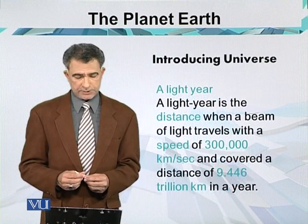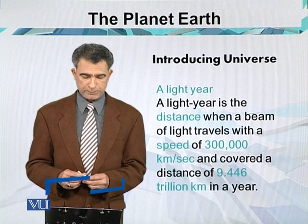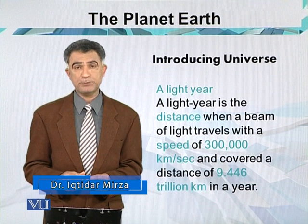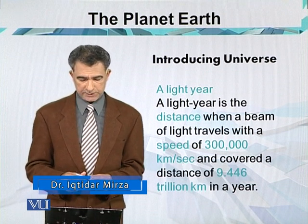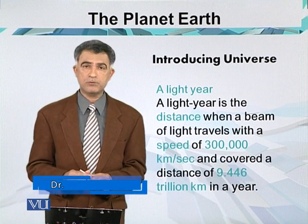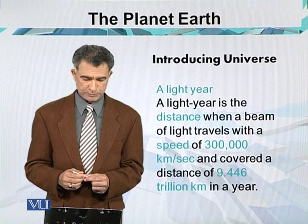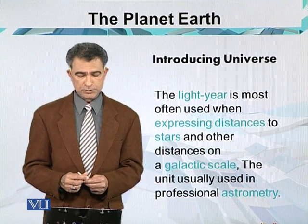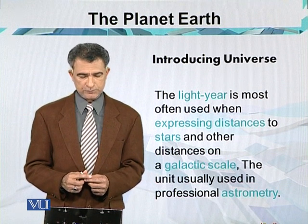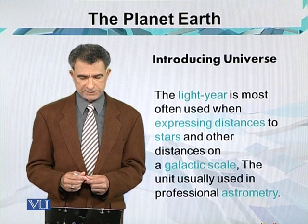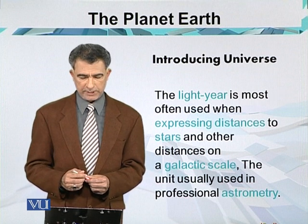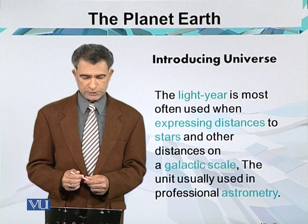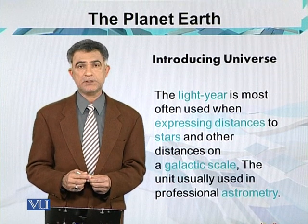A light year is the distance a beam of light travels at a speed of 300,000 kilometers per second, covering a distance of about 9.446 trillion kilometers in a year. The light year is most often used when expressing distances to stars and other distances on the galactic scale, and is the unit usually used in professional astronomy.